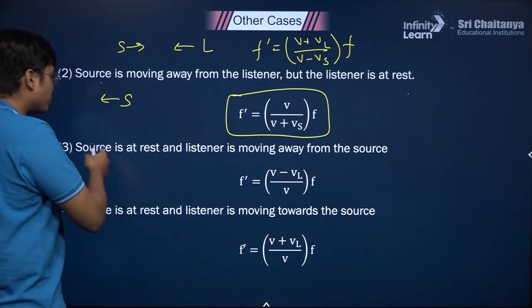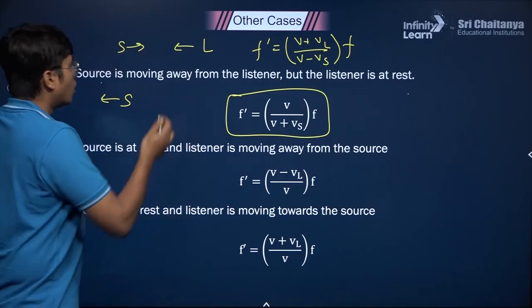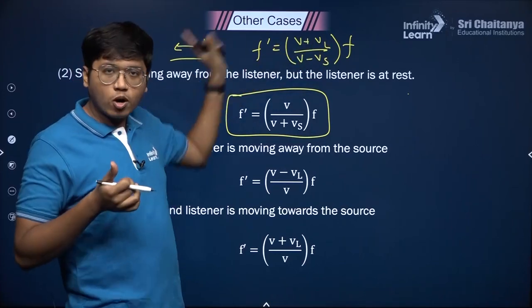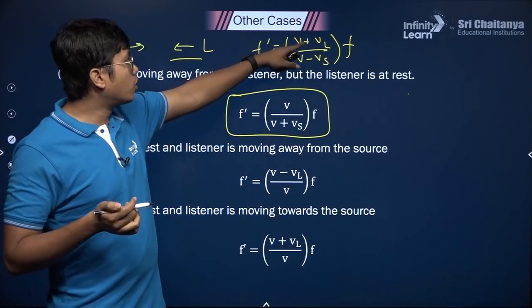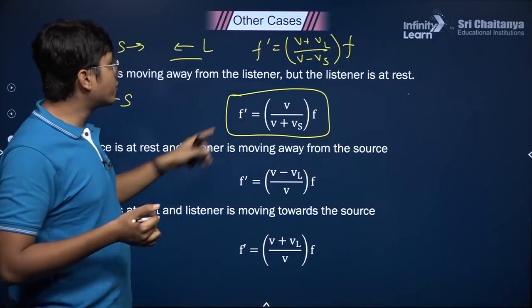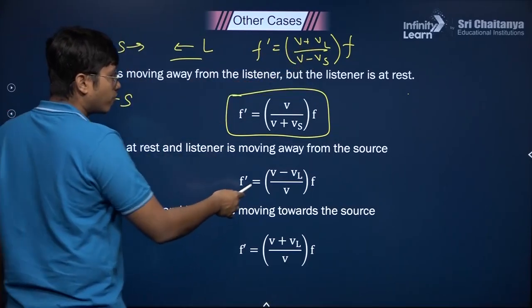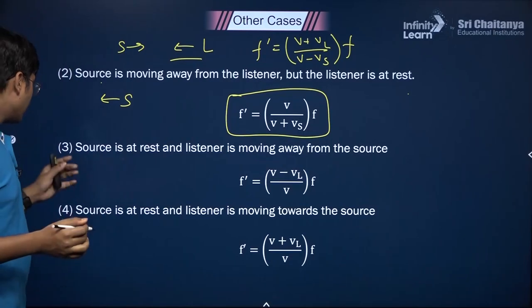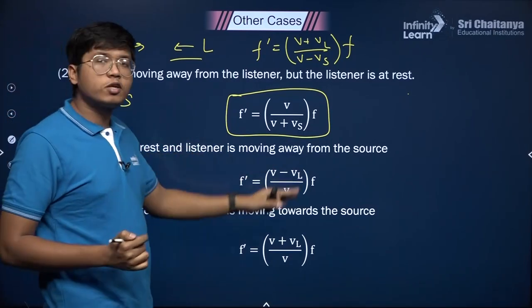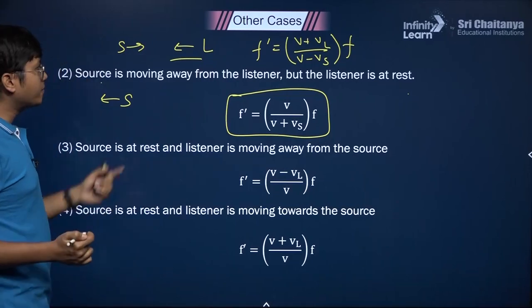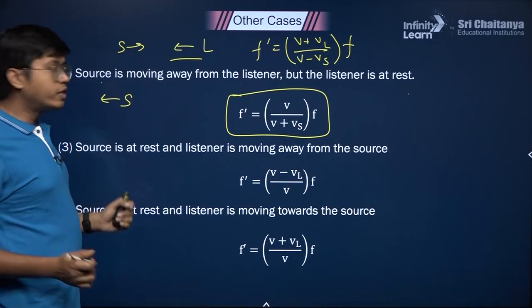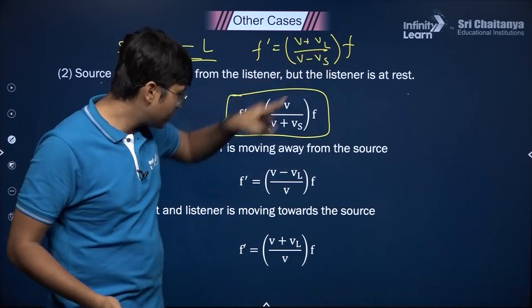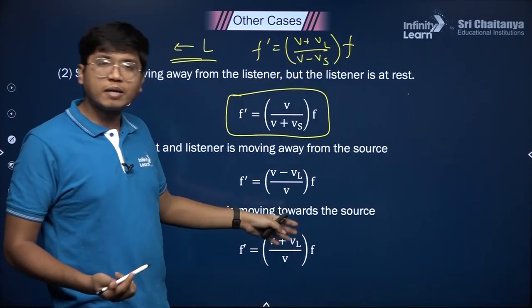Now let's try: source at rest, listener moving away from source. In the original case the listener moves towards the source. Now the listener moving away means Vl comes with a negative sign — opposite direction means negative sign for vectors. So Vl gets a negative sign and Vs = 0, giving F' = (V − Vl) / V × F. Next case: source at rest, listener moving towards the source. This is the same direction as our base case, so Vl stays positive. Put Vs = 0 in the bottom part and you get the relation.